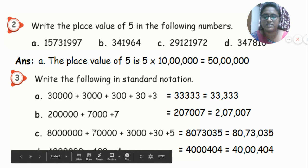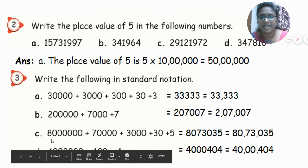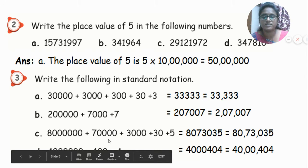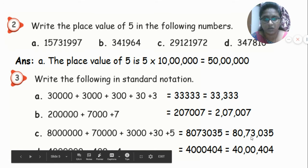Next: ones, tens, hundreds, thousands, ten thousands, lakhs, ten lakhs — giving eighty lakhs, seventy-three thousand and thirty-five. So eighty lakhs, seventy-three thousand, thirty-five.